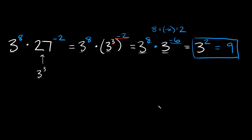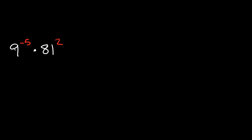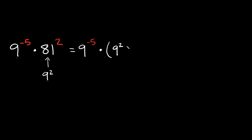Let's do a few more problems that are going to be a little bit harder. Here is the next problem: nine raised to the negative fifth power times 81 raised to the second power. The first thing you want to do is see if you can rewrite the bases so they match up. You can see that 81 can be rewritten as nine squared, giving us the same base — a nine and a nine.